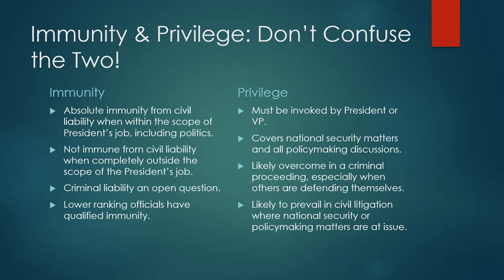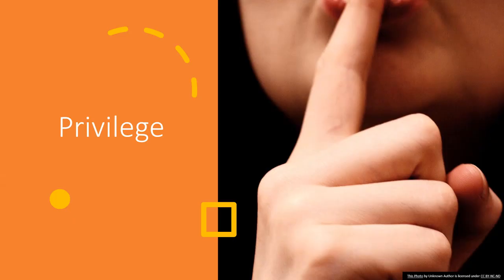Privilege has to do with keeping secrets. If I claim privilege — you'll know this from being an attorney — if you invoke attorney-client privilege, that means you're not going to disclose information because that information is secret; it's between you and your client. So privilege comes up when the issue is whether the president or vice president has to disclose certain information. When the question is whether the president can withhold information, you're being tested on privilege.